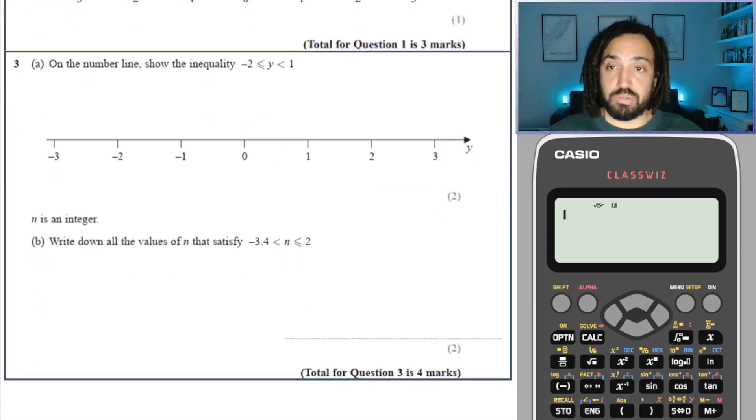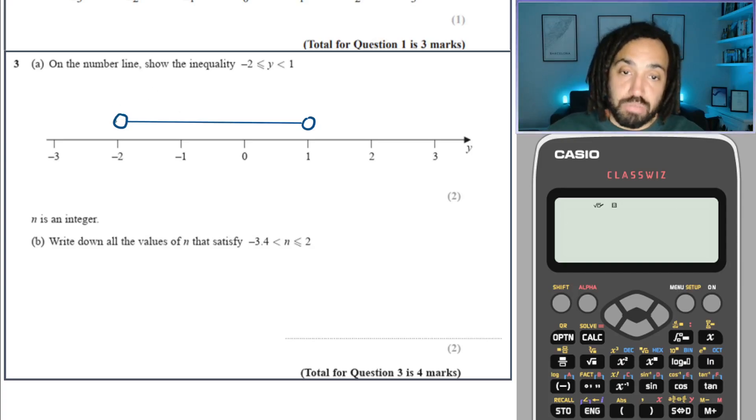Now this one is a bounded inequality, it's in between minus 2 and 1. So we draw a circle at minus 2 and a circle at 1 and we draw a line just connecting them because it's bounded in between. But because minus 2 it can equal, we shade that one in and that is done.